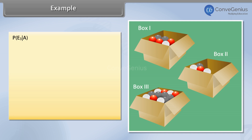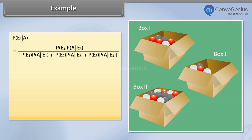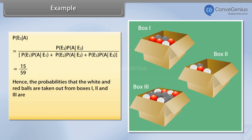P(E3|A) = P(E3)·P(A|E3) / [P(E1)·P(A|E1) + P(E2)·P(A|E2) + P(E3)·P(A|E3)] = 15/59. Hence, the probabilities that the white and red balls are taken out from boxes 1, 2 and 3 are 33/118, 55/118 and 15/59.